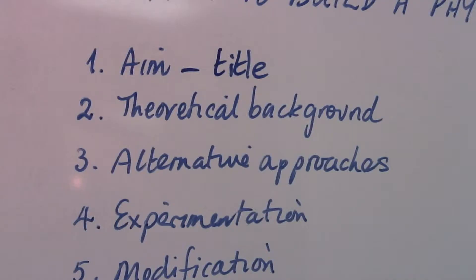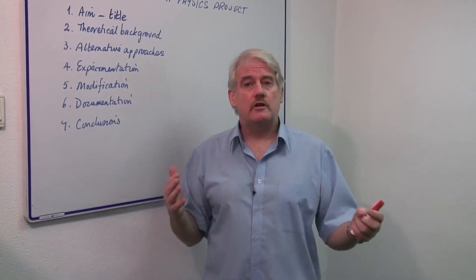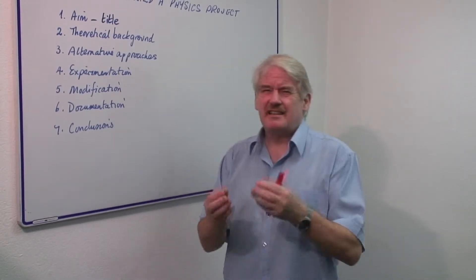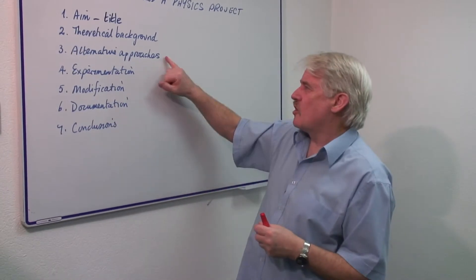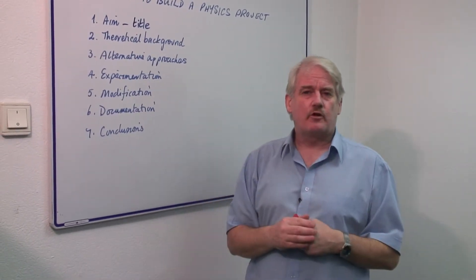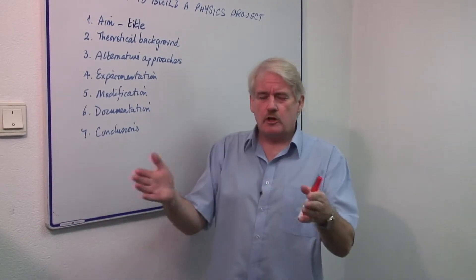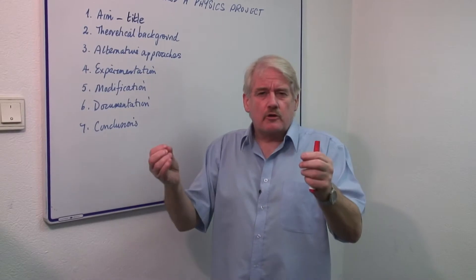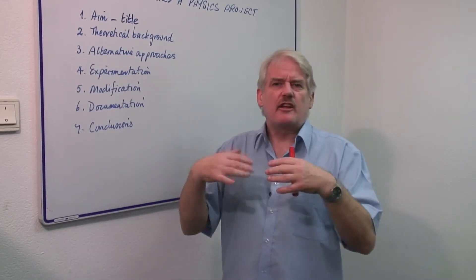Then the third thing is to look at the experiment but look at all the alternative ways of doing things. With an experiment, you've got to make it as accurate as possible. So alternative approaches will improve the accuracy of your experiment. In other words, which equipment do you use? Do you use a ruler or do you use a micrometer to measure lengths?